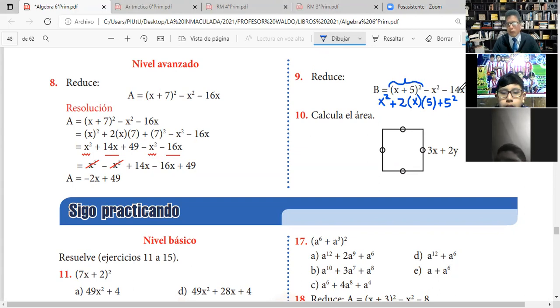Primero estoy desarrollando esta parte de acá. Luego agrego todo lo demás. Aquí tenemos X al cuadrado, más 2 por 5 es 10X, más 5 al cuadrado es 25. Ya que resolví el binomio suma al cuadrado, voy a agregar lo demás: más menos X al cuadrado, menos 14X.